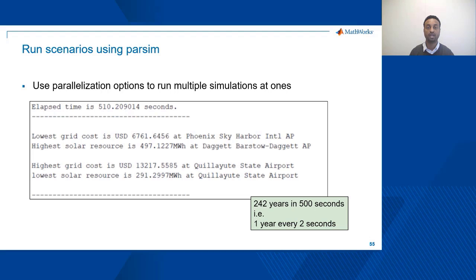With both input data available for all locations, we can make use of parallelization to speed up simulation for the 242 different locations. With such an option enabled, we are able to run the simulation in less than 10 minutes and are able to answer the four questions that we started with.